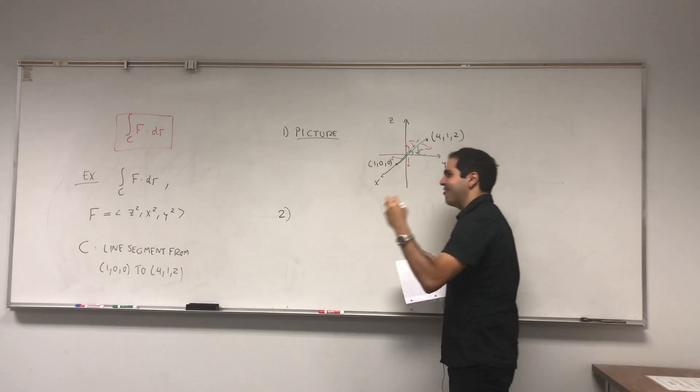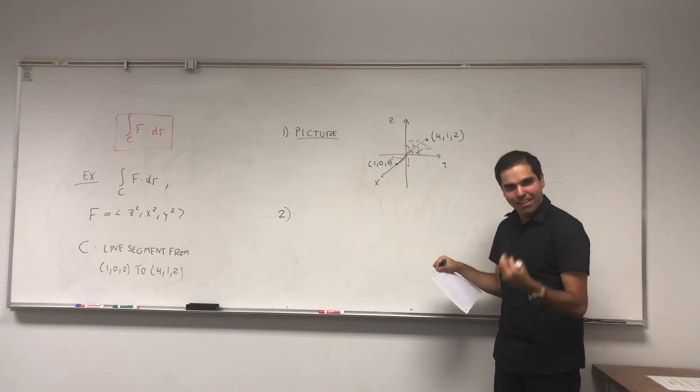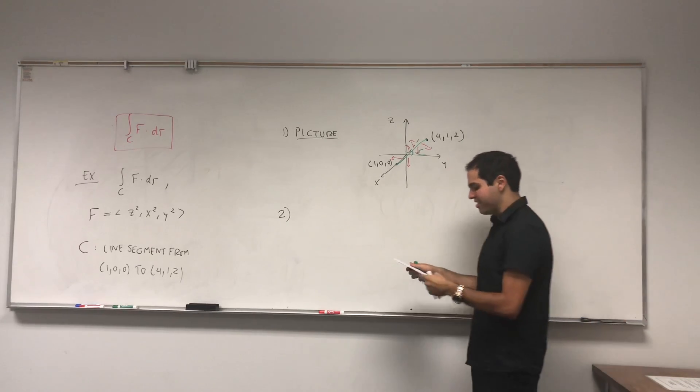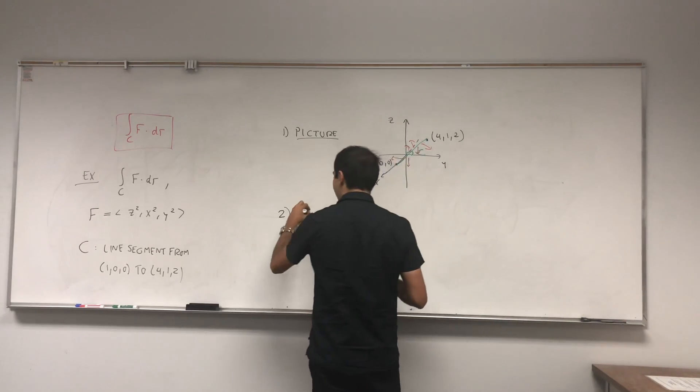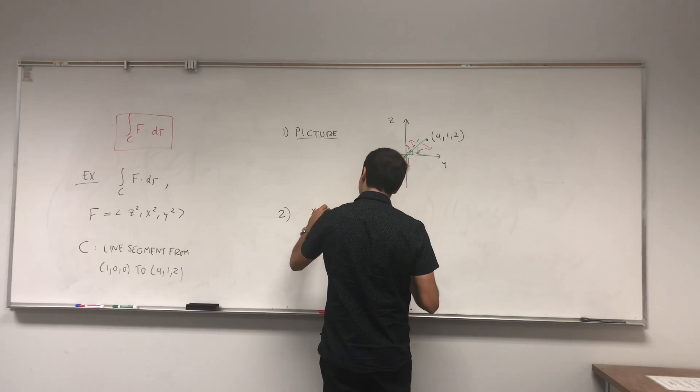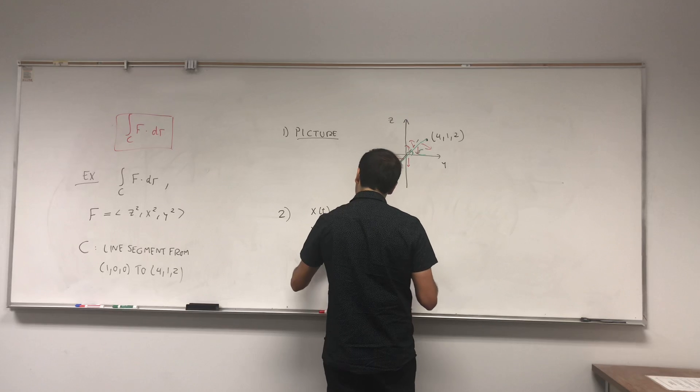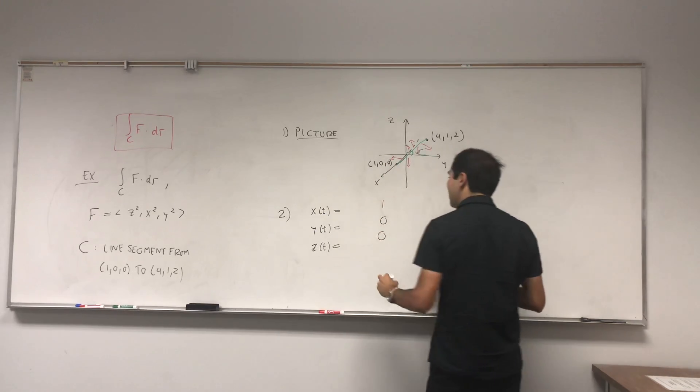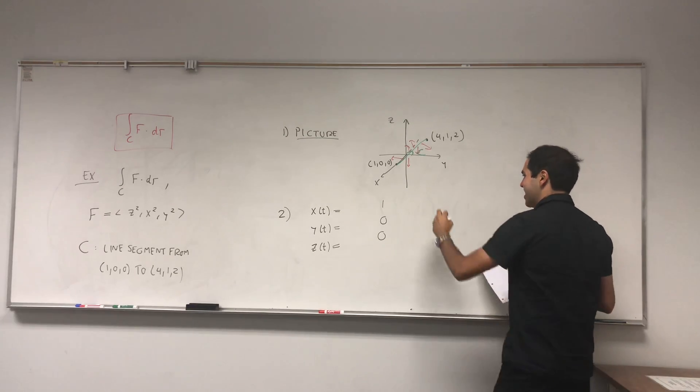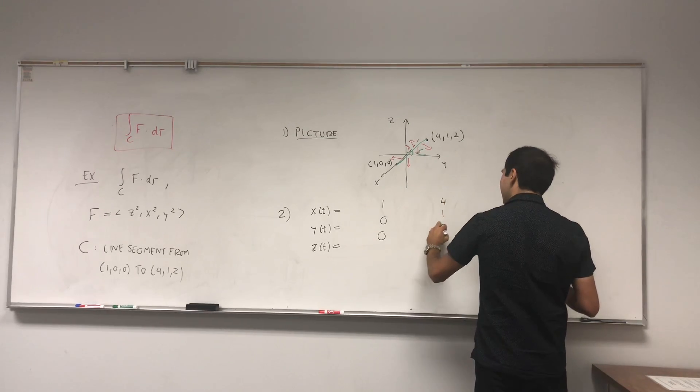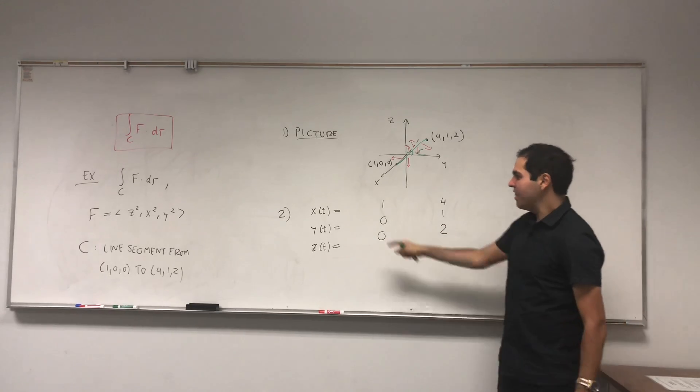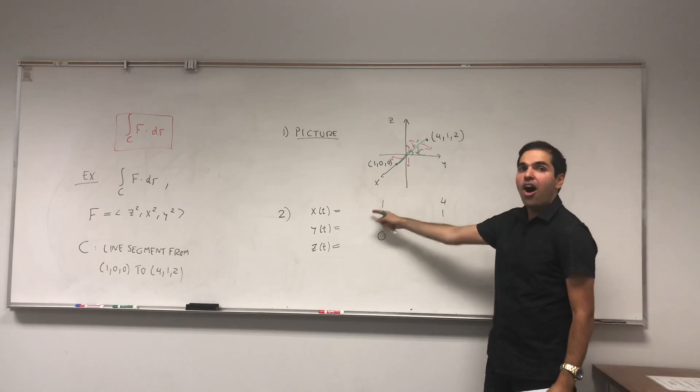And again, I want to emphasize, the most important thing in vector calculus is just parametrizing your curve or your surface. So now, let's just parametrize that line segment. x(t), y(t), z(t). And here's a neat thing. There's actually a very systematic way of parametrizing line segments. You put your points here, (1, 0, 0), (4, 1, 2). And then you put what I call an on and off switch.